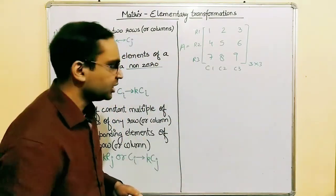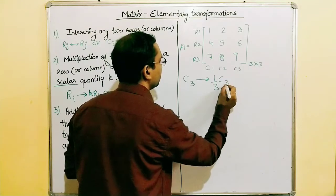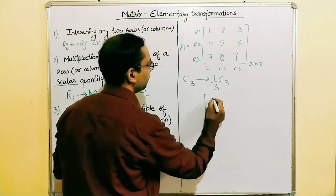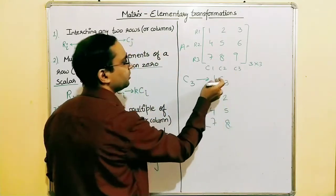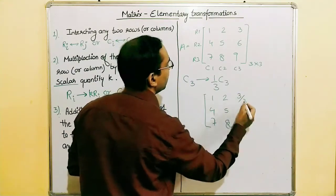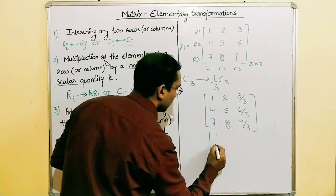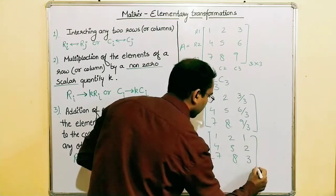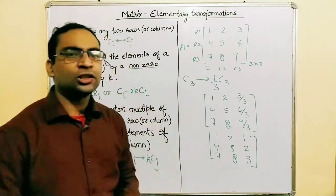Let me show a column example. If we perform C3 → (1/3)·C3, one-third is also a valid non-zero scalar. The first column (one, four, seven) and second column (two, five, eight) remain the same. The third column becomes: three divided by three is one, six divided by three is two, and nine divided by three is three. This updated matrix is also equivalent to the original.